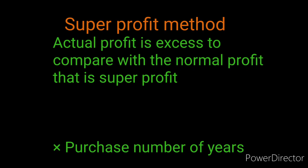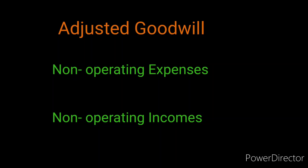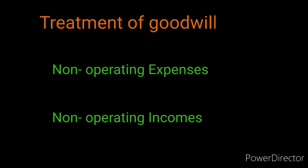The formula for capitalization of average profit method is: Average Profit × 100 ÷ Normal Rate of Return. For adjusted goodwill based on super profit, non-operating incomes that boosted profit will be subtracted, and non-operating expenses that reduced profit will be added back, to get the exact amount of profit. Then goodwill can be calculated accordingly.